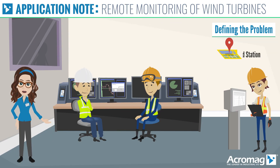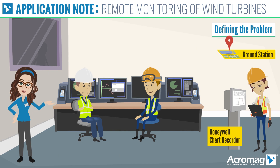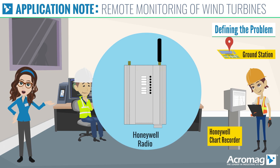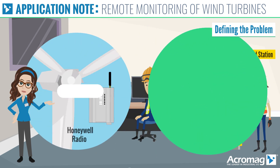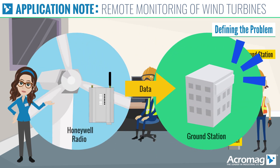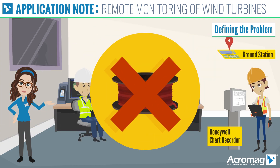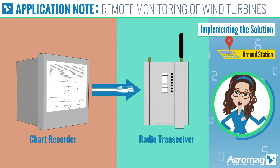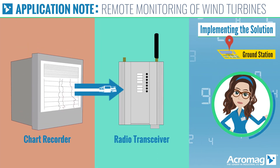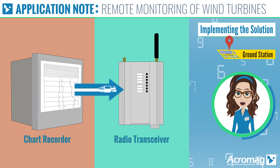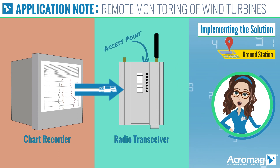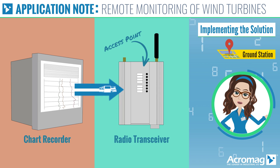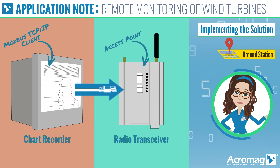The ground station is equipped with a Honeywell chart recorder that also serves as the Modbus client. The system will use Honeywell ethernet radio links to send information from the wind turbine head to the ground station, thereby eliminating the need for long ethernet cable runs. At the ground station, connect the Honeywell chart recorder to the ethernet port of one of the Honeywell radio transceivers. Configure the radio transceiver as an access point and set up the chart recorder as a Modbus TCP/IP client.